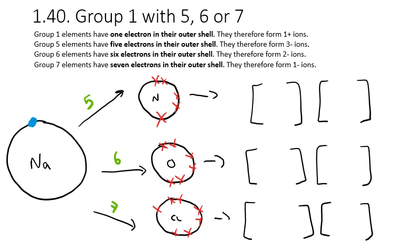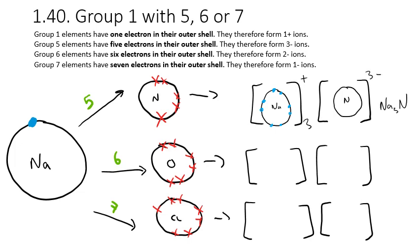Sodium bonding with nitrogen: nitrogen has 5 in the outer shell and needs to gain 3 electrons, so we need 3 sodiums to bond with it — we're making Na3N. Three sodium atoms each give up 1 electron to the nitrogen. We end up with 3 sodium ions each with 8 electrons in the second shell, forming 3× Na1+ ions. The nitrogen, gaining 3 electrons, becomes a N3- ion. You can see we've balanced the charges — 3 pluses and 3 minuses — and we've therefore formed sodium nitride.